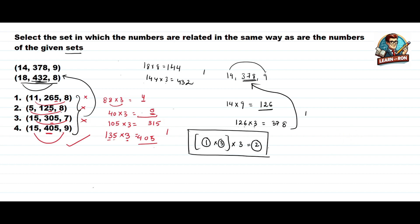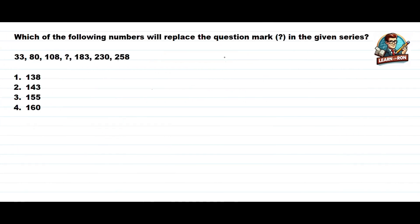Let's see the next question — a number series question. We need to find the value in place of the question mark. The series is: 33, 80, 108, 183, 230, and 258. Let's find the differences first. 80 minus 33 is 47. 108 minus 80 is 28.